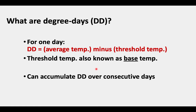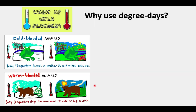Part three: how to use degree days. What are degree days? For one day, the definition of a degree day is simply the average temperature minus a threshold temperature. The threshold temperature can also be known as the base temperature. And then you can accumulate these degree days over consecutive days. Why use degree days? It's particularly useful for cold-blooded animals.